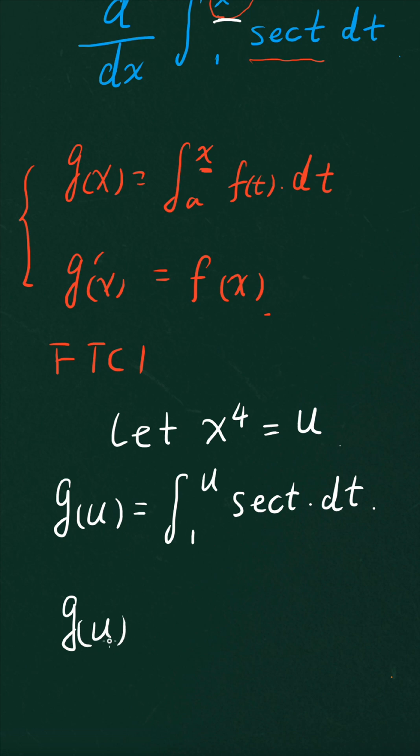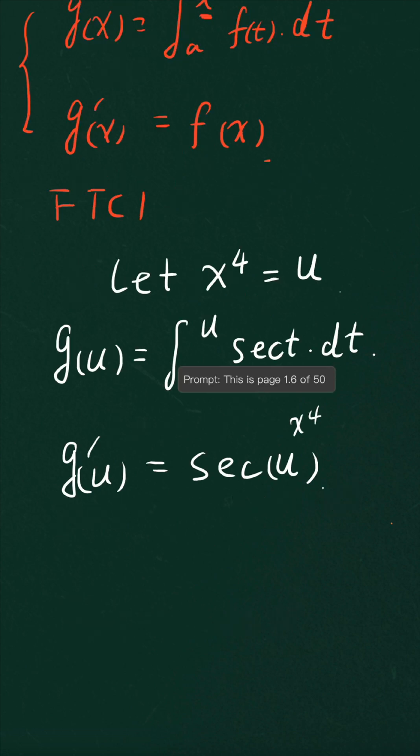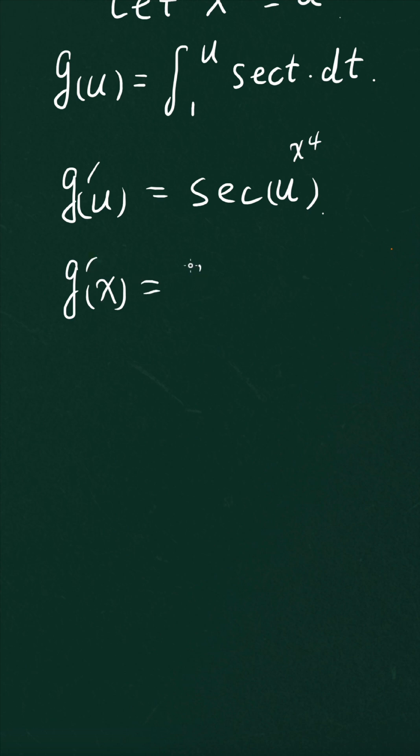The derivative of g(u) is equal to secant u, which gives you the derivative of g(x) is equal to the derivative of g(u) times the derivative of u with respect to x. And we're going to substitute u with x raised to the fourth power.